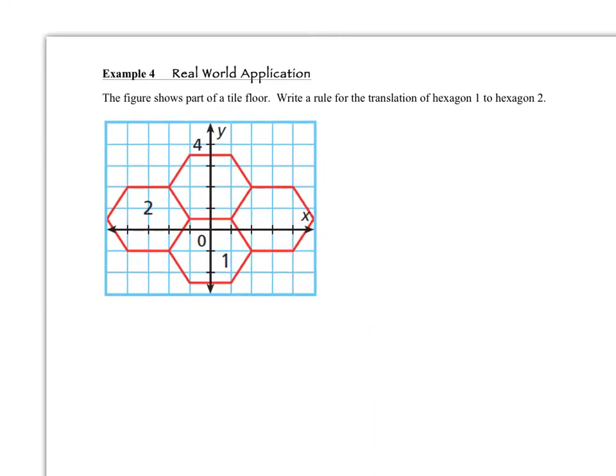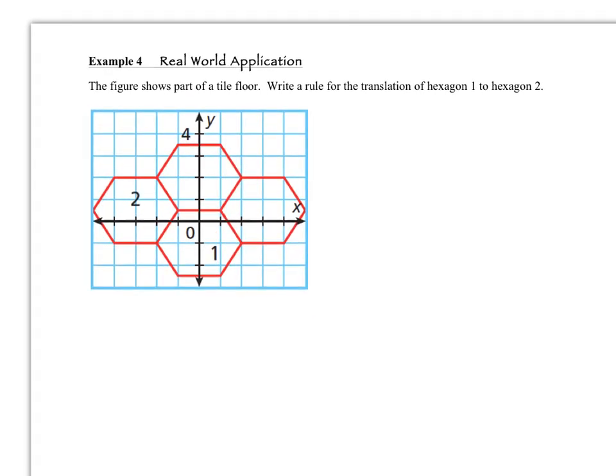This is our last example before we hit our practice problems. In question number 4, we've got a real-world application. This is a part of a tile floor, and we want to write a mapping rule for the translation of hexagon 1 to hexagon 2. I'm going to color the hexagons 1 and 2 in, just so that it makes it a little bit easier to read. I'm also going to label them pre-image and image, so that we know exactly what we're working with.